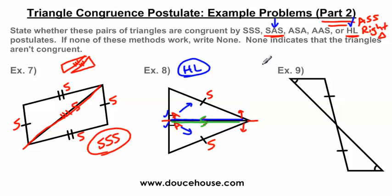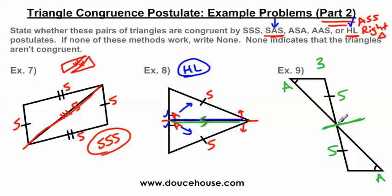Looking at number nine, this angle is congruent to this angle, and this side is congruent to this side. I have two triangles sharing a vertex. I need a combination of three sides or angles to prove congruence, and I don't have any tick marks indicating additional sides are congruent. But keep in mind — I have a line intersecting another line, so there's actually a hidden vertical angle. Since I have vertical angles, I know those angles are congruent. So I have angle, angle, side and angle, angle, side — two angles and a side.